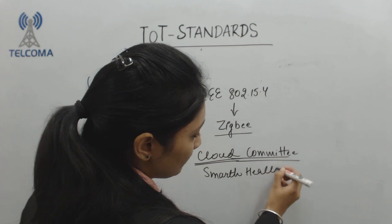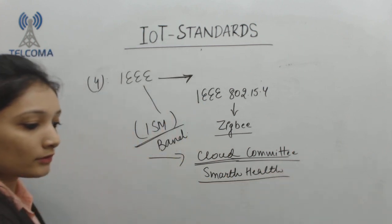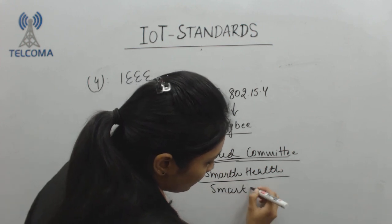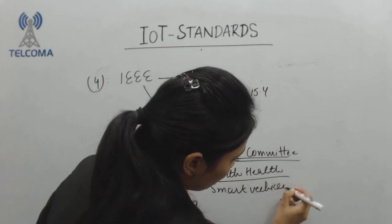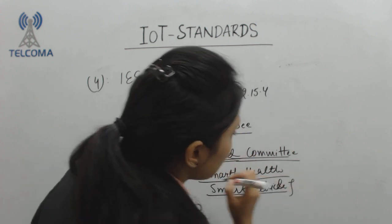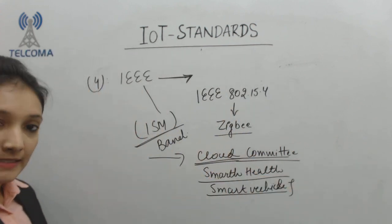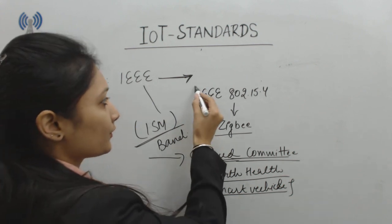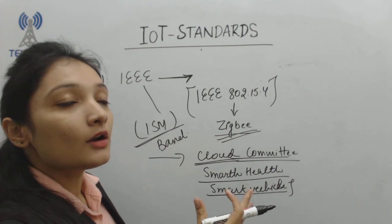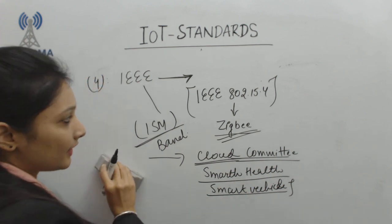IEEE has many standards including for smart health and smart vehicle systems. But its key collaboration is with the ZigBee Alliance, which is a major enabling technology in Internet of Things systems.